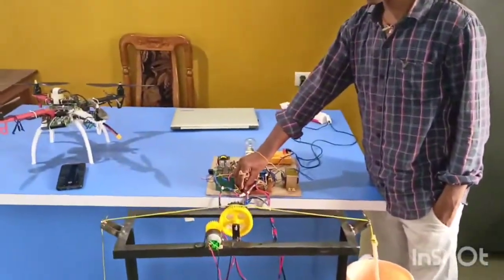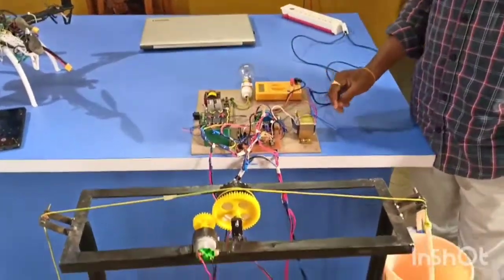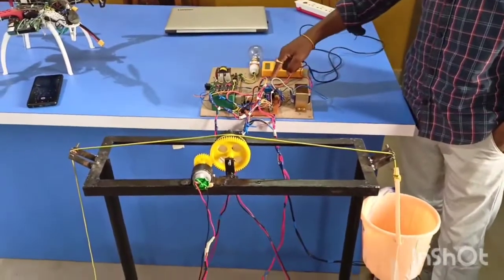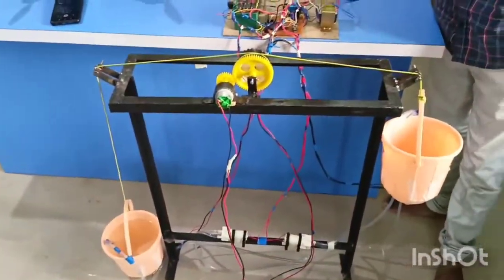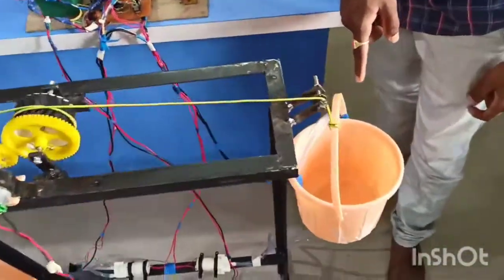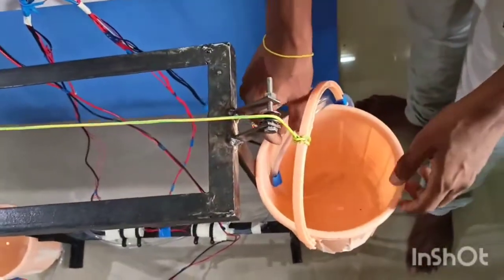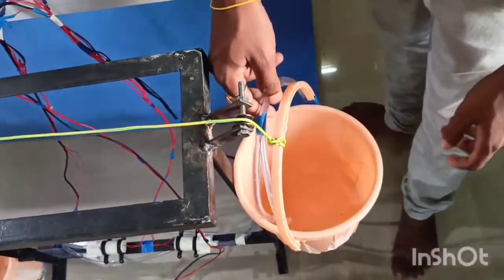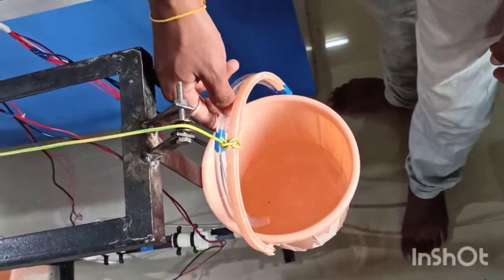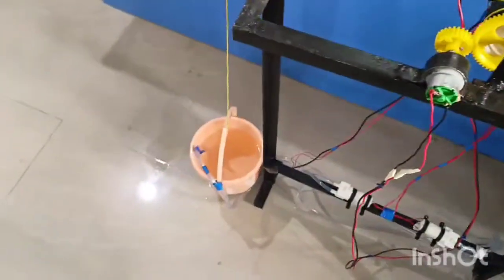Initially I am turning on the Arduino. Whenever I turn on the Arduino, you can see that the water from that bucket is being pushed to this bucket. You can see that water is coming. The water is pushing from that bucket to this bucket and you can see the reduction of water from that bucket.